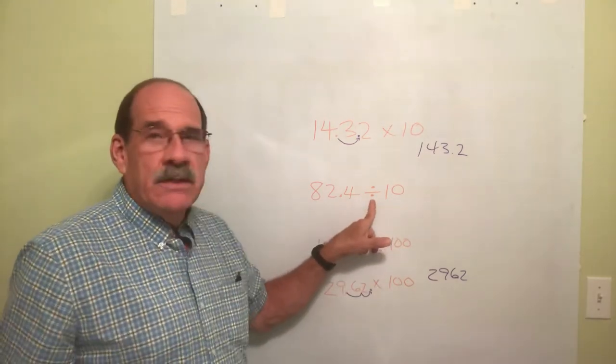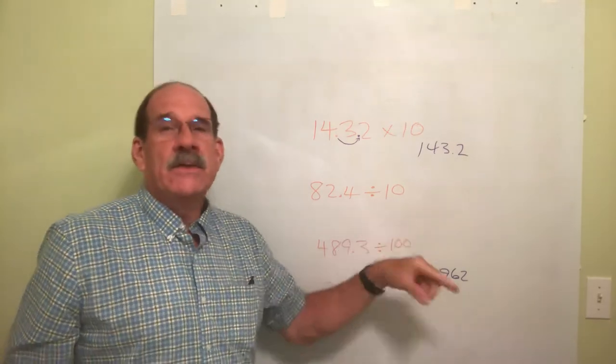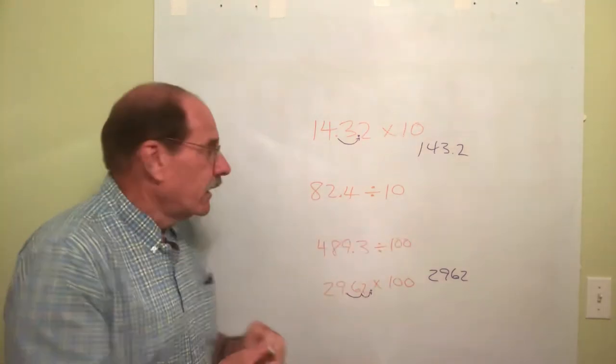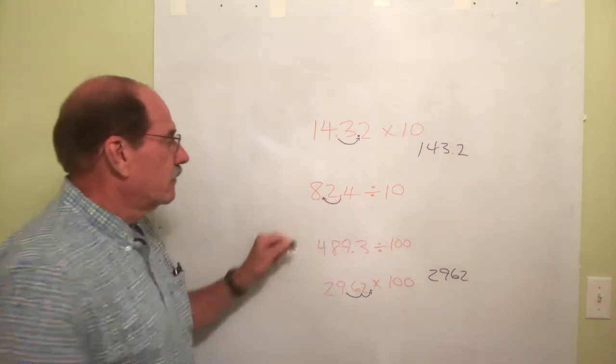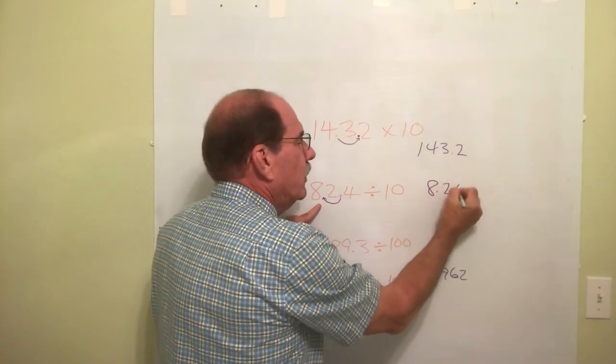Well, if I'm moving the dot to the left, how many places will I do it with the number 10? Since there's only one zero in the 10, I move it one place. So the dot starts out right there. I go to the left one place. It ends up right there. So the answer is 8.24.